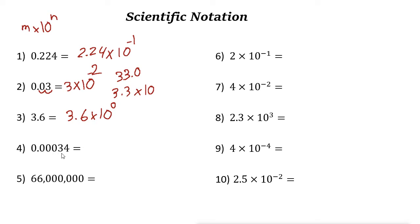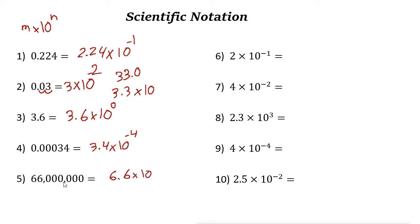For 0.00034, we move the decimal point 1, 2, 3, 4 places to the right to get 3.4, so the answer is 3.4 times 10 to the power of negative 4. For a number like 66,000,000, the power is positive. We want to get 6.6, and counting the places: 1, 2, 3, 4, 5, 6, 7 — so it is 6.6 times 10 to the power of 7.